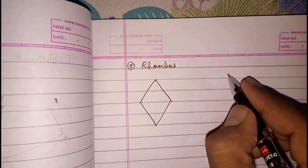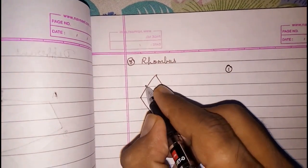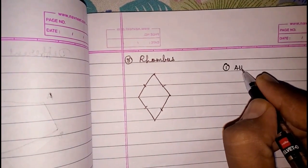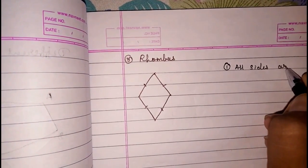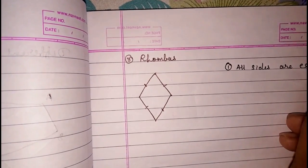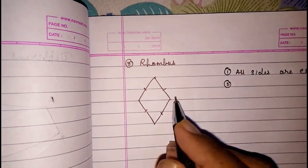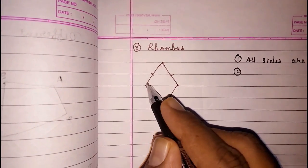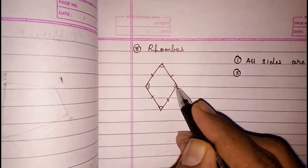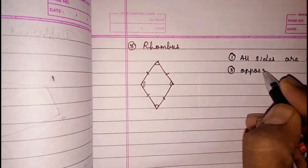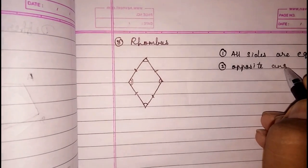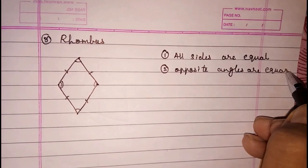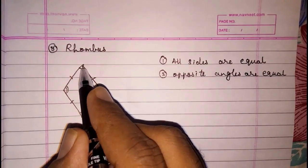This is a rhombus. The first property of a rhombus: all sides are equal. The second property: opposite angles are equal. Here the opposite angles are equal. Then here also the diagonals...